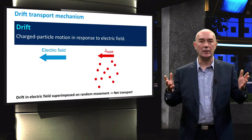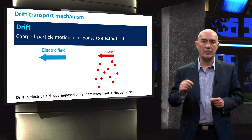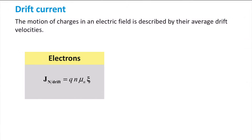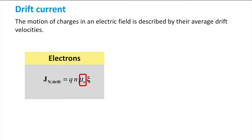Let's take a look at how to calculate these drift current densities, starting with electrons. The equation for the electron drift current density J_n,drift contains q, the elementary charge; n, the concentration of electrons; the electric field; and finally µn, the mobility of electrons. Let's take a closer look at mobility, an important semiconductor parameter.